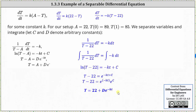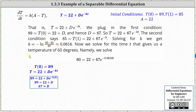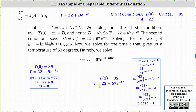Now that we have the general solution, we need to determine D and K using the initial conditions. Let's first determine the value of D using the initial condition big T of zero equals 89. To do this, we substitute zero for t and 89 for big T, giving us 89 equals 22 plus D times e to the power of negative K times zero. Since e to the zero equals one, solving for D we subtract 22 from both sides and get D equals 67. So now we know big T equals 22 plus 67 times e to the power of negative Kt.